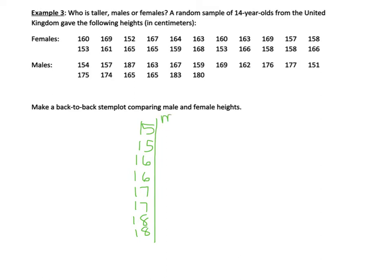I'm going to put males on the right-hand side — you can put females on the right, it doesn't really matter. First I'm going to look at my males and put in the numbers that represent males between 150 and 154. As with previous sections, it's always a good idea to mark off each height as you use it. Then do the same thing with 157, 159, and the 160s.